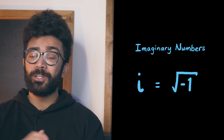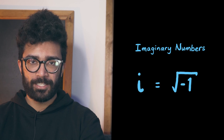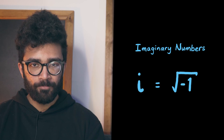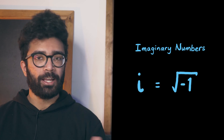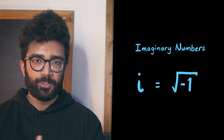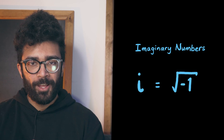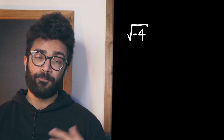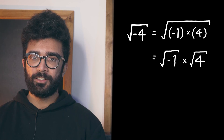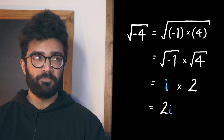In school, we're often taught that only positive numbers can have a square root. But at some point, someone thought: what if we could find the square root of negative numbers? The imaginary number i was defined as the square root of negative one, and it's only called imaginary because back then it was considered fake or useless. But it's just a name.